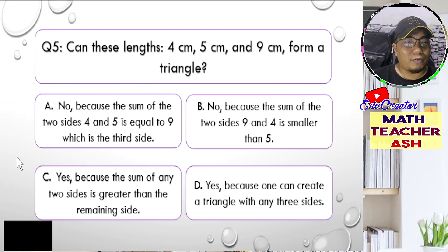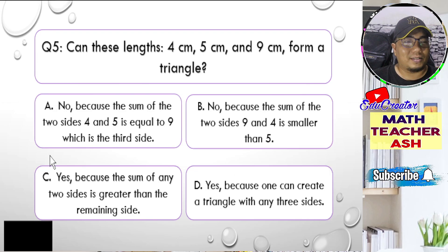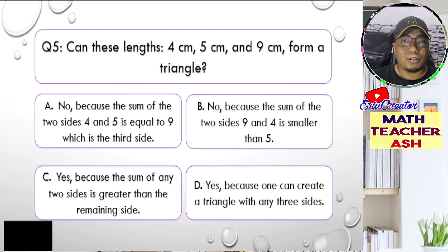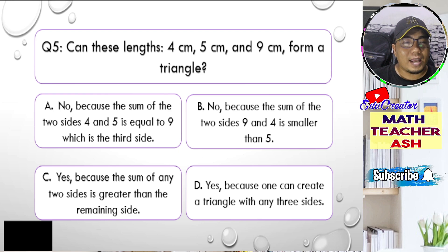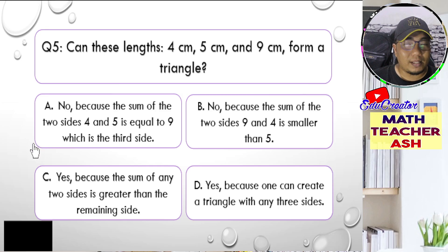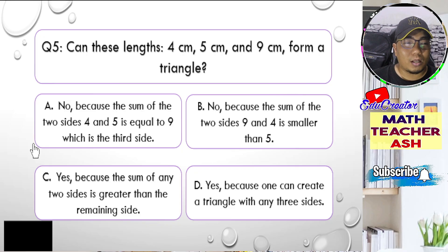Let us go to question number five. Can the lengths 4, 5, and 9 form a triangle? Is it A, no because the sum of two sides 4 and 5 is equal to 9 which is the third side; B, no because the sum of two sides 9 and 4 is smaller than 5; C, yes because the sum of any two sides is greater than the remaining side; or D, yes because one can create a triangle with any three sides?